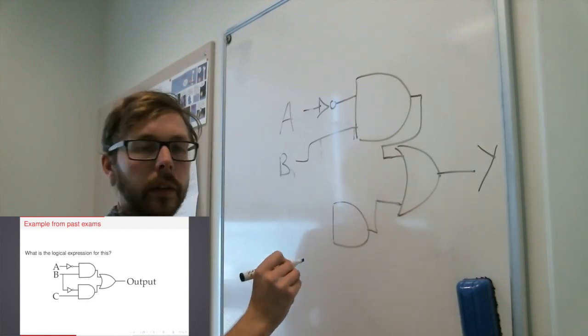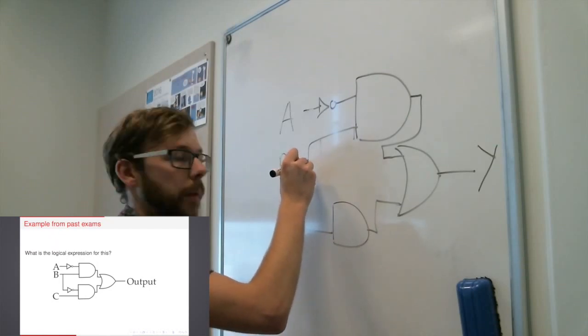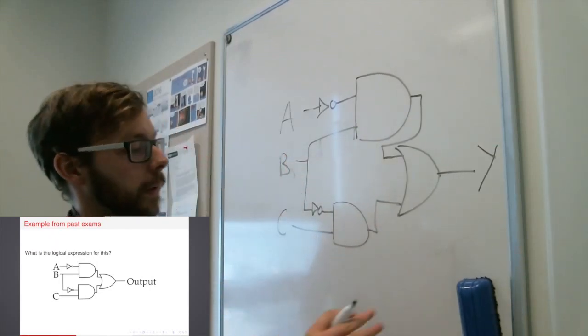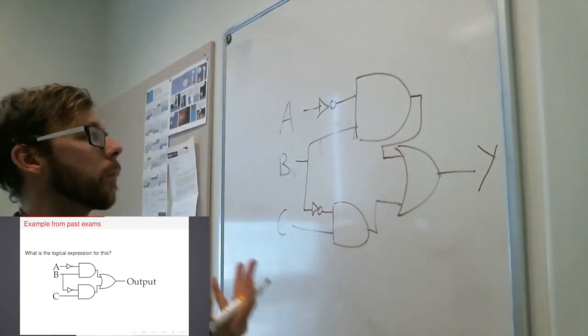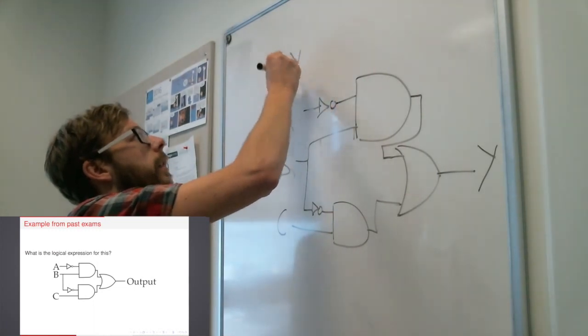And my B goes straight into there. I've got another AND gate down here. Like that. And I've got a C input in there. And then a B that goes in there. Okay.